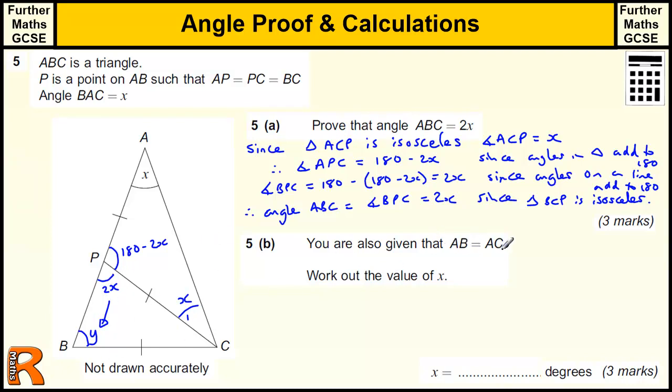You are given that AB equals AC. AB and AC are equal. Work out the value of x. So if I know this whole triangle is isosceles, then I should be able to work out the value of x because we have this angle ABC is 2X.